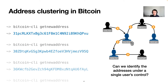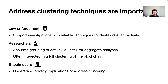The question of address clustering in bitcoin then is: can we still somehow identify all of those different addresses under a single user's control? This question is very important for a variety of different people. For example, law enforcement agencies investigating thefts in cryptocurrencies require reliable technical techniques to identify relevant activity of those actors.